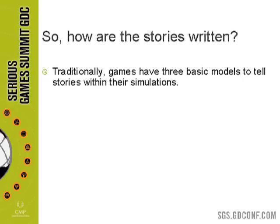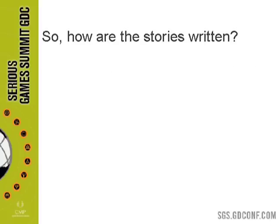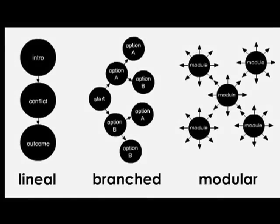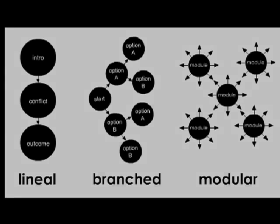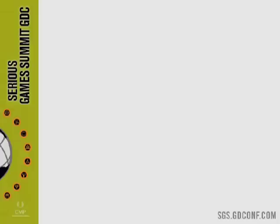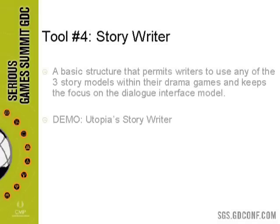So, how are the stories written? We have characters, an interface to interact with them, and emotions — but we need the stories to be written. Games have three basic ways of modeling stories: linear stories, which is the most common type; branched or hierarchical stories, where according to decisions you wander through options; and modular stories, where you create tiny bits of chapters that can be remixed any possible way and still make sense. That's one of the most challenging ways of writing stories, but not that challenging once you get a grip on it.